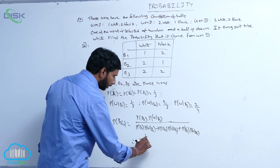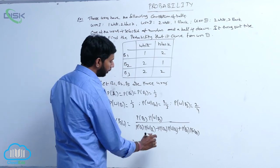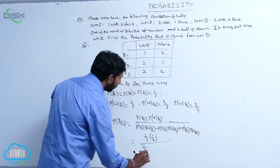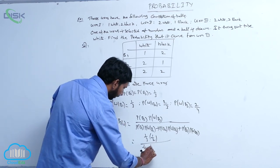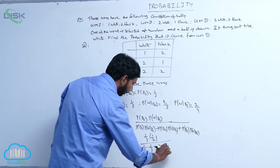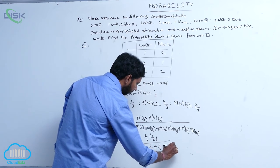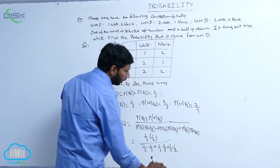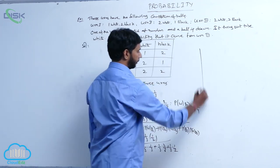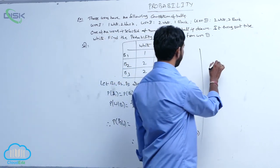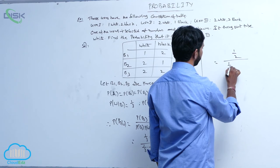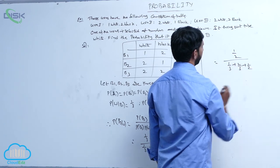Since 1/3 is common in both numerator and denominator, it cancels. The expression becomes 1/2 divided by 1/3 plus 2/3 plus 1/2. This simplifies to 1/2 divided by 1/3 plus 2/3 plus 1/2.